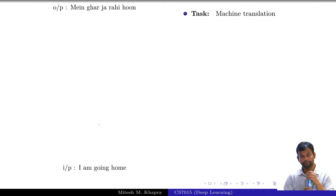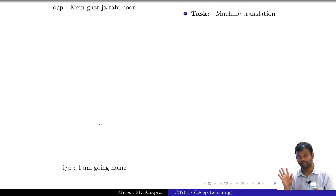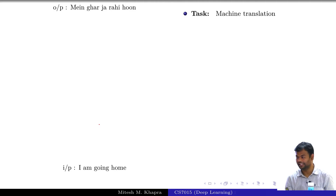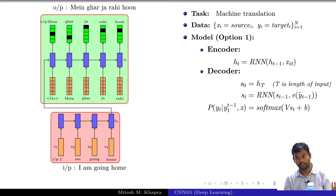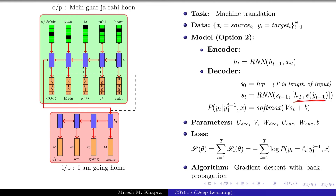Machine translation: input is an English sentence, output is a Hindi sentence. The encoder is an RNN, the decoder is an RNN. Loss function: sum of cross-entropies. Training algorithm: back-propagation through time, all the way back. In option 1 you set S_0 to H_T; for option 2, you concatenate the last encoder time step with the input at every decoder time step.